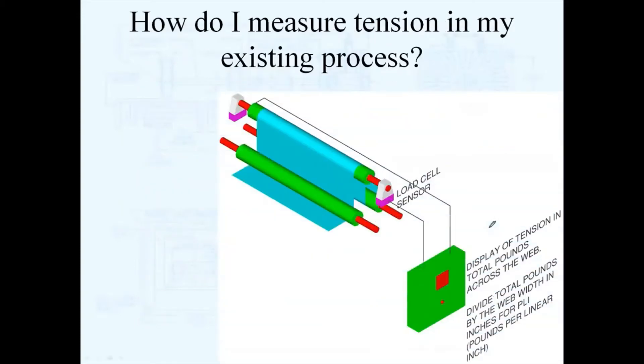One way to measure tension in an existing process is with load cells. Load cells use strain gauges. When you apply force to your web in the machine direction, the web itself will apply a weight to this roller, and these strain gauges will measure how much weight is on this roller.